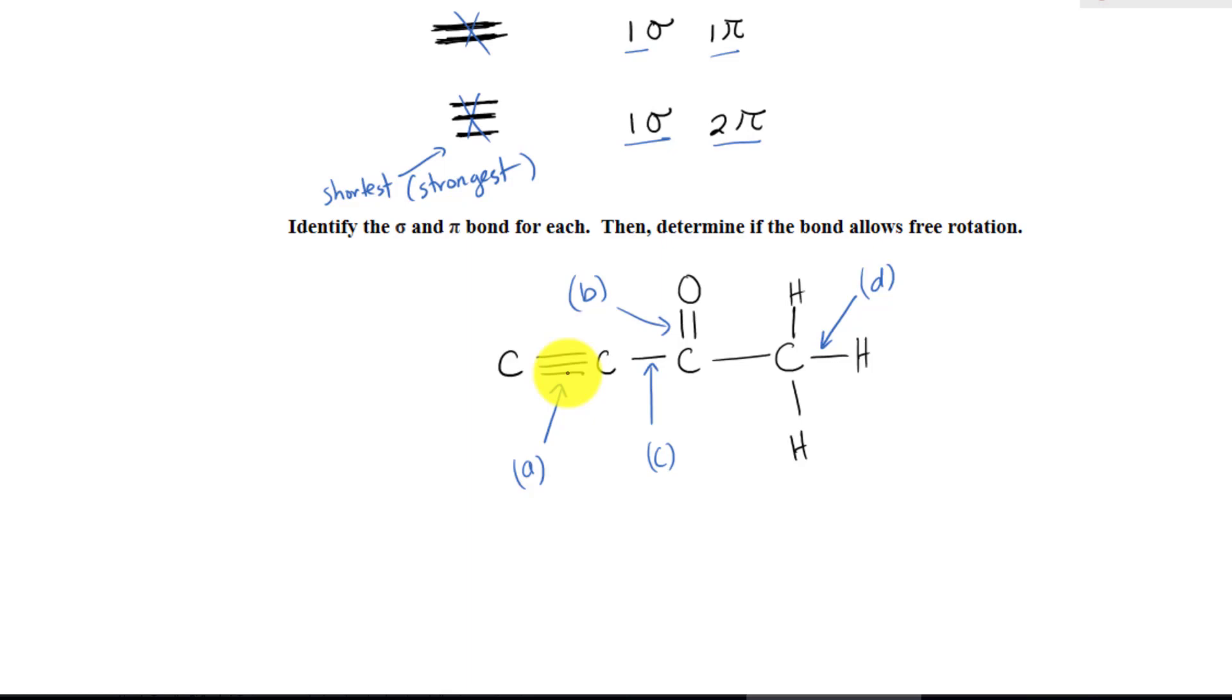Let's do A. A is a triple bond. How many sigma bonds does it have? It has one sigma bond and two pi bonds. Does it allow free rotation? We know that the only type of bond that allows free rotation is going to be single bond. So this does not allow free rotation. We're going to put no FR - no free rotation.